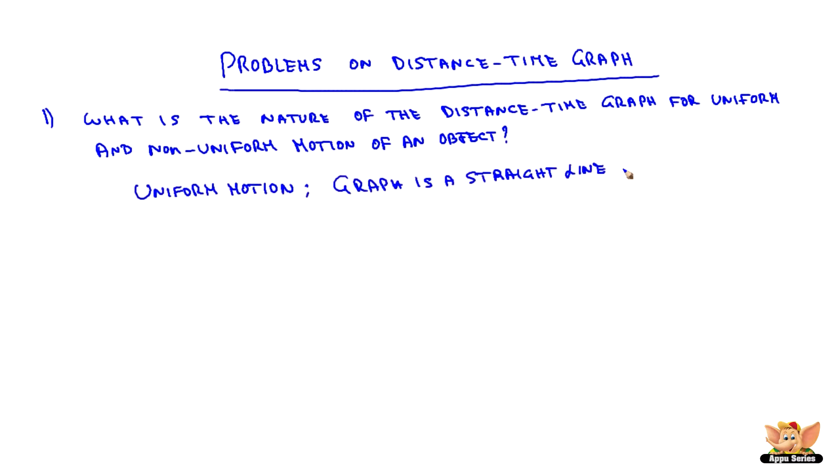For uniform motion, graph is a straight line. For non-uniform motion, graph is a curved line.